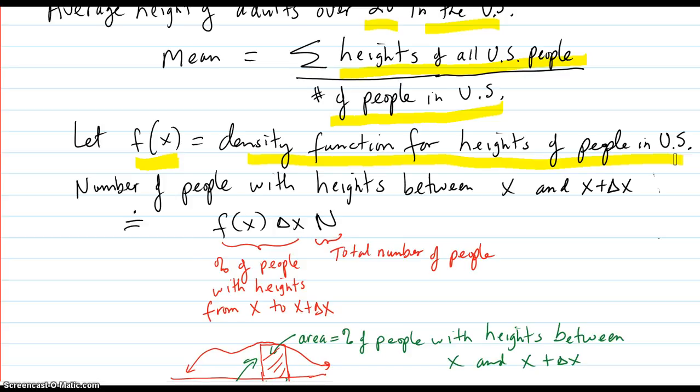And the number, therefore, of people with heights between height x and height x plus delta x, where x is the height.